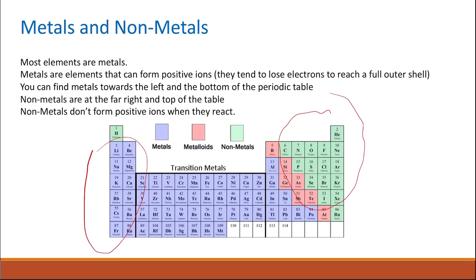Metals tend to lose electrons when they react, forming positively charged ions. Non-metals do not form positively charged ions; instead, they either gain electrons to form negatively charged ions, or they share their electrons. The chemical reactivity and types of bonds will be discussed in more detail when we cover the different types of chemical bonds.